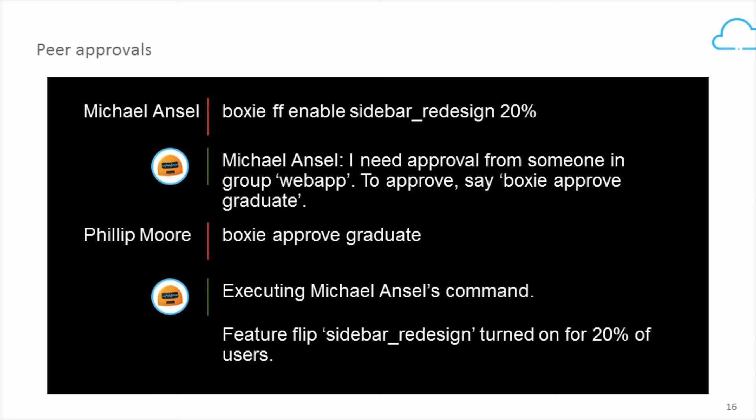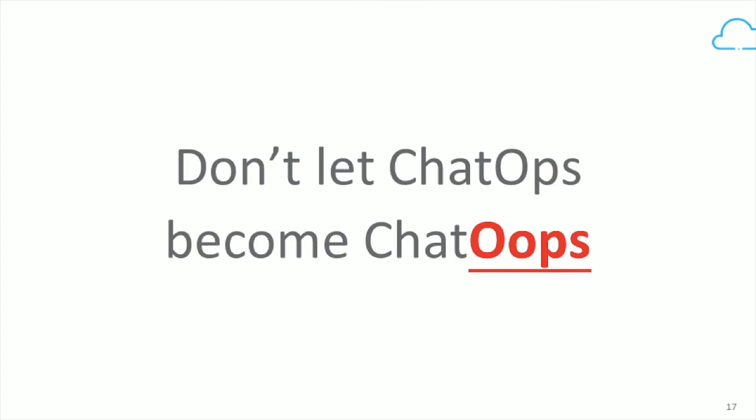The next piece is: once we know who you are, we want to make sure that you're allowed to do what you're doing. So we added an approval system. Rather than having people break out of chat to go to a ticket system and do the traditional approval process, we looked at putting all of this stuff into chat and having the chat bot manage the entire flow. Overall, don't let chat ops become chat oops. Chat ops is awesome and you really don't want your front desk deploying code to production. So think about it and make sure that your whole system is safe.